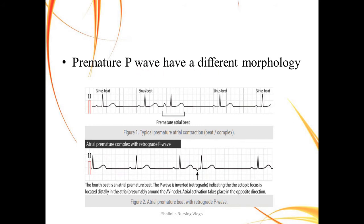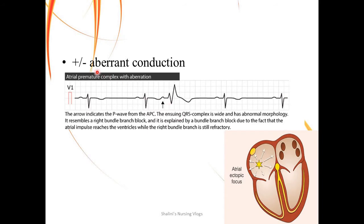Premature P waves have a different morphology. In this first picture, the premature atrial beat has a P wave that is positively deflected but a little steeper than the other P waves — so there is a morphological change, and it has occurred earlier than expected. A positive deflection means the impulse is generated somewhere around the SA node; a negative deflection means it is generated somewhere around the AV node. Even when positively deflected, premature P waves will be a little more sharp and steep compared to the other P waves.